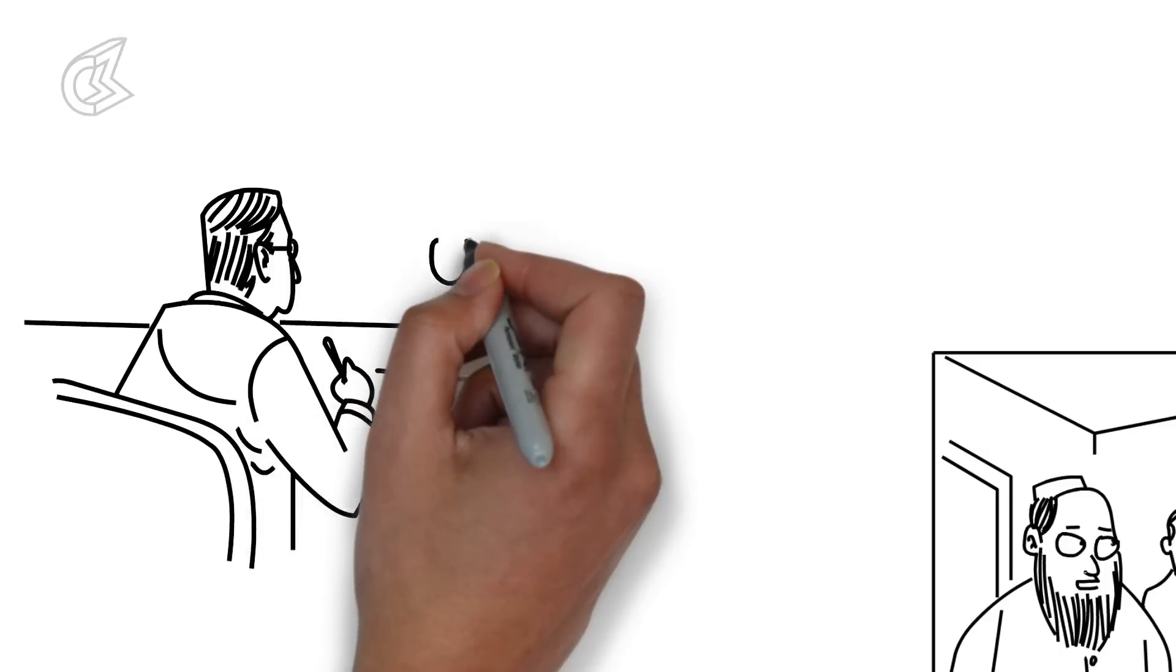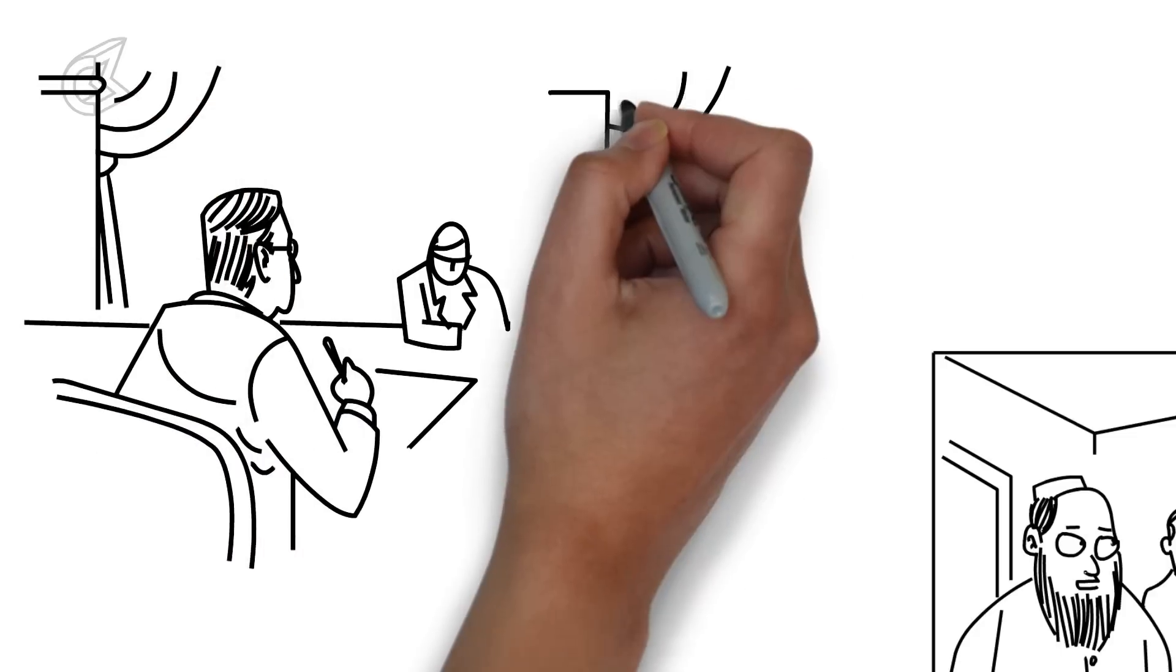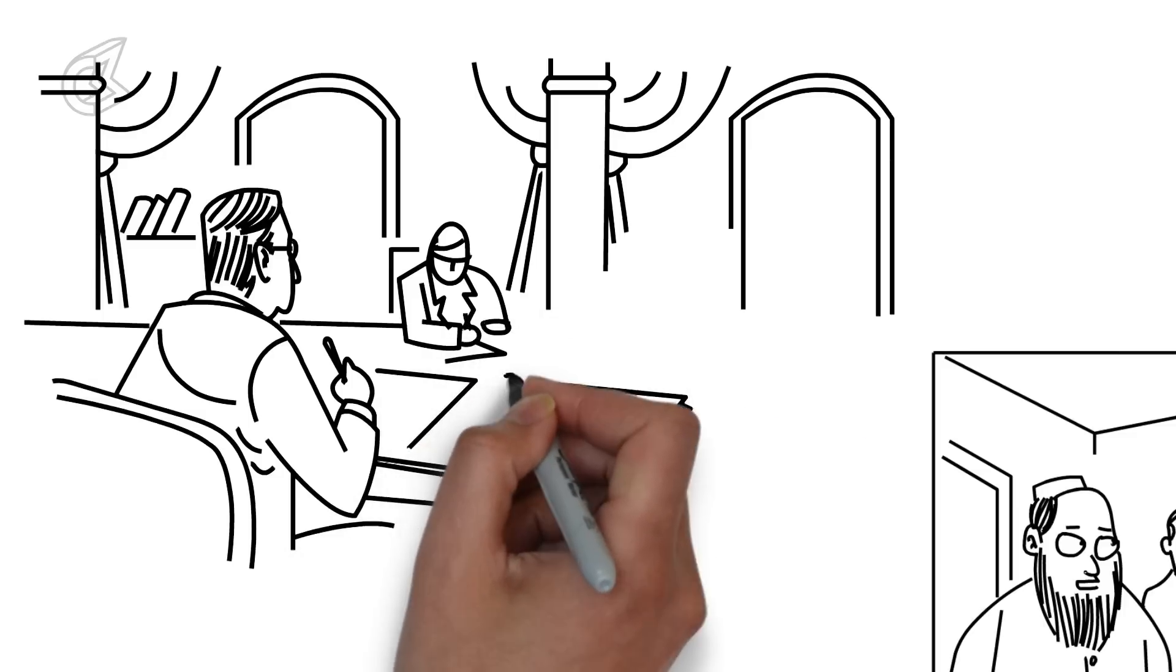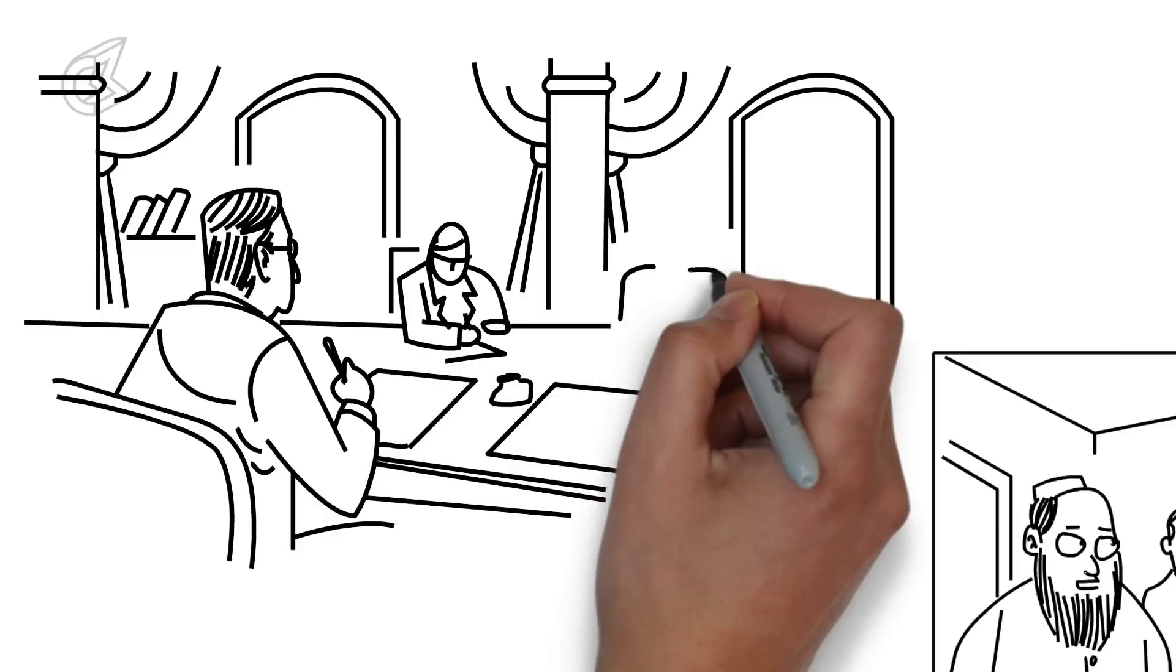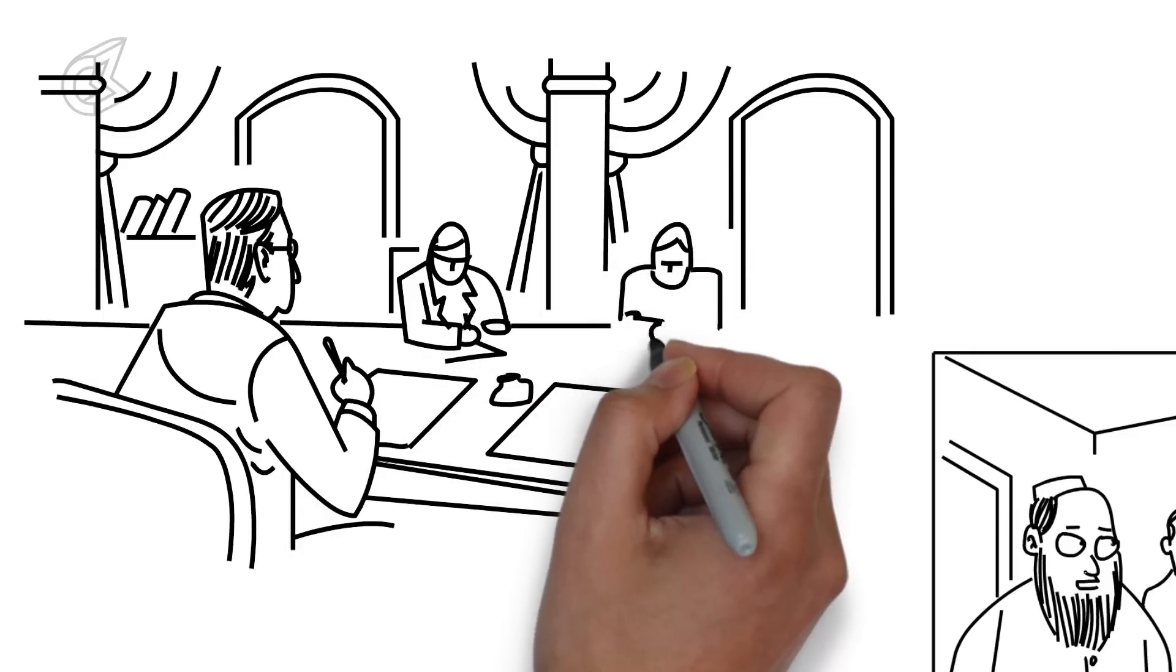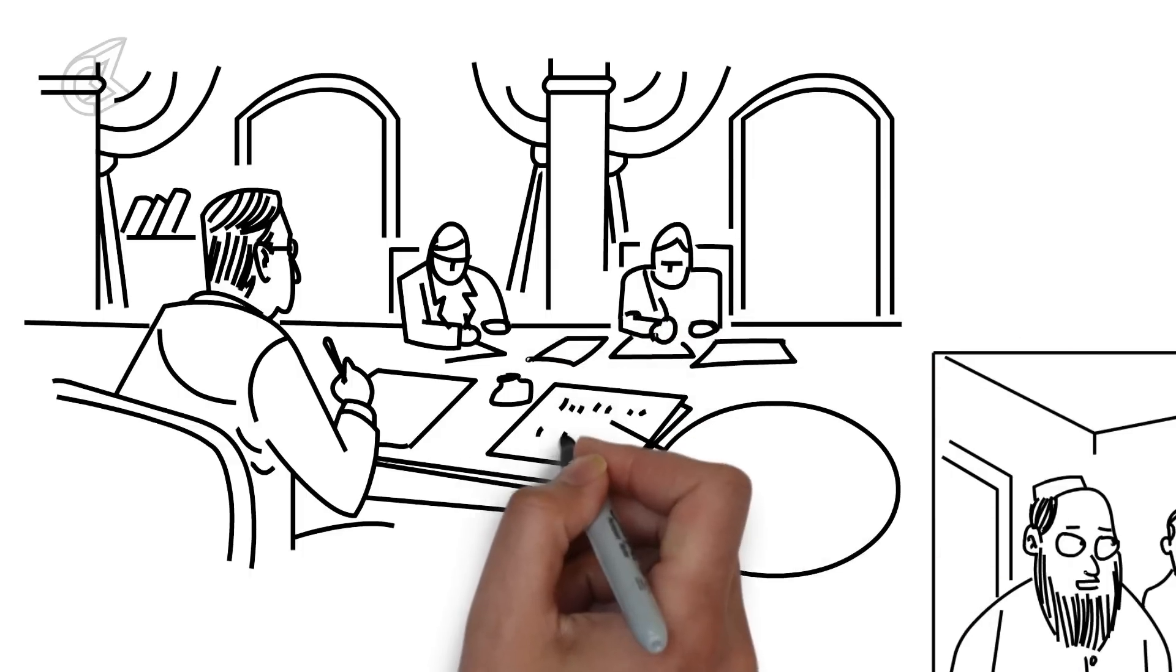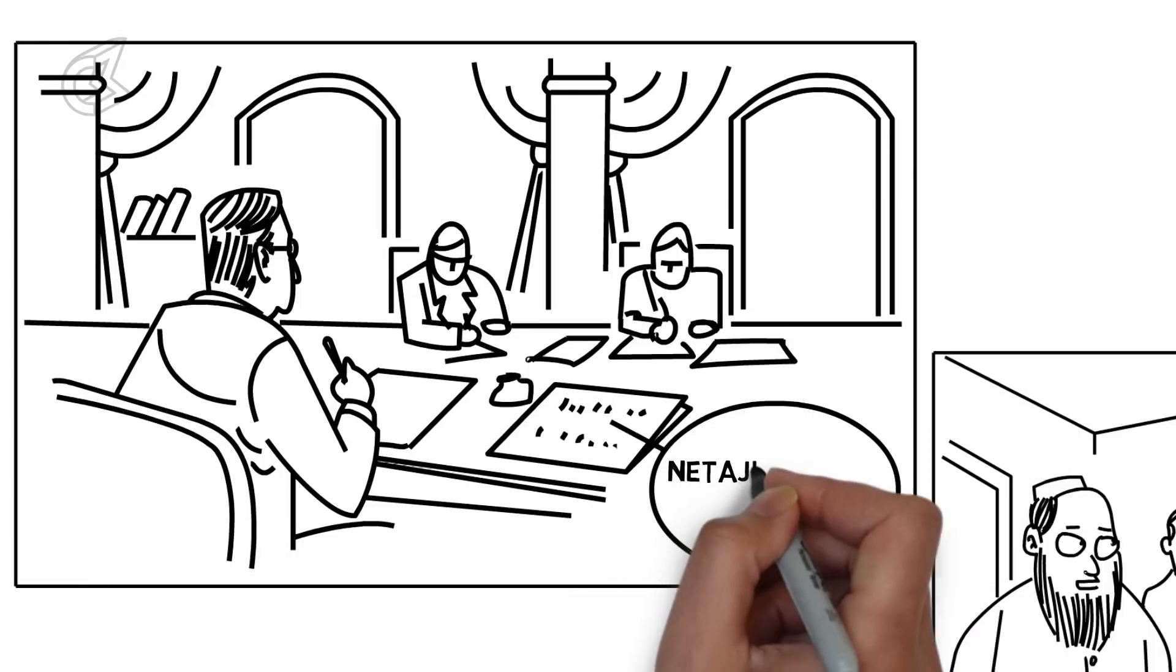They inform Netaji that they will arrange to send him to Berlin or Rome at the earliest. The German embassy in Moscow is asked to procure a passport for Netaji. But red tape seems rife among even the German bureaucracy. Or so it seems. And anxious days go by in Kabul's winter for Netaji and his companions.